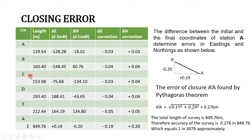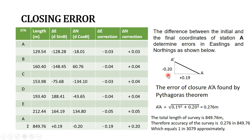Let's assume A-dash is the first position of A, and A is the closing position of our closed polygon traversy. From our previous calculations, we worked out and found that the error for the change in eastings was plus 0.19, and also for the northings was minus 0.20. The northings represent the vertical value — the change in northings is minus 0.20, and the change in eastings is plus 0.19.